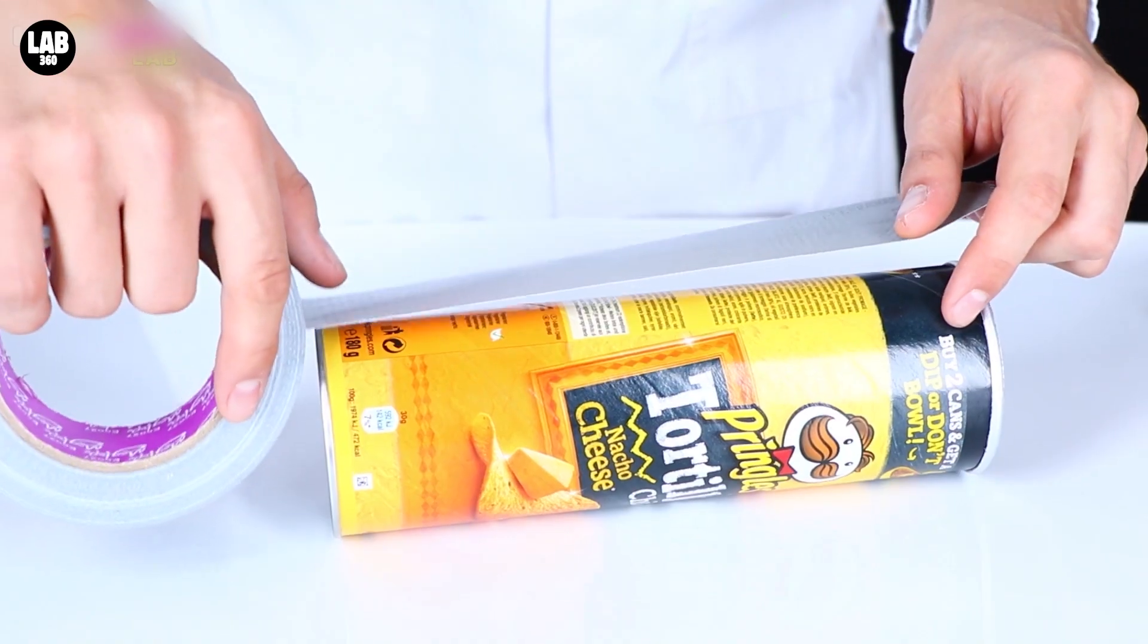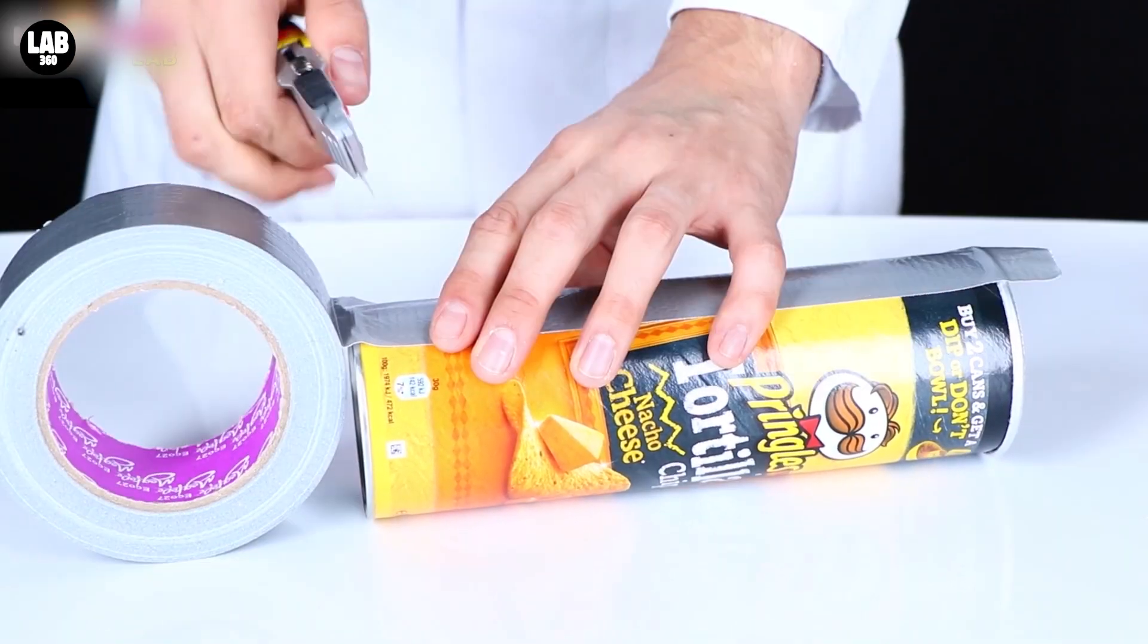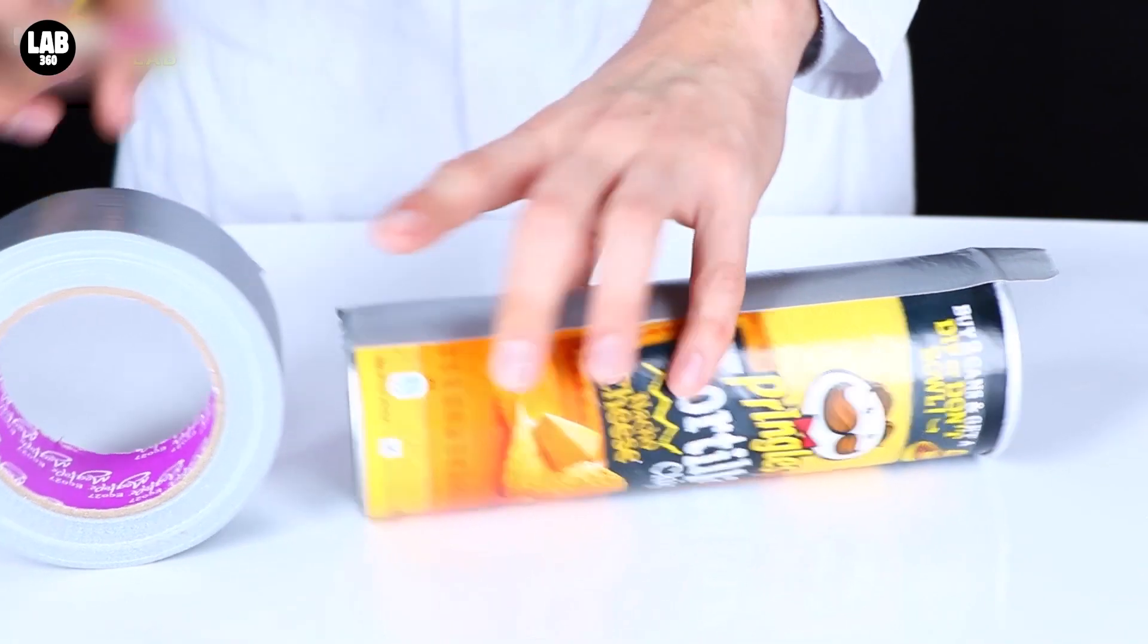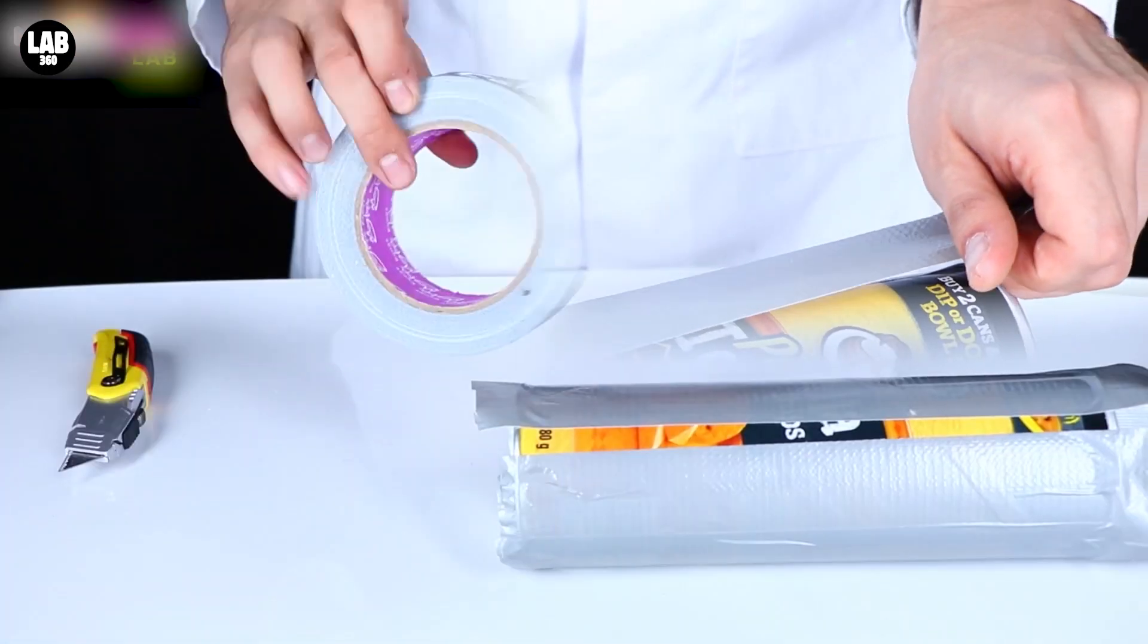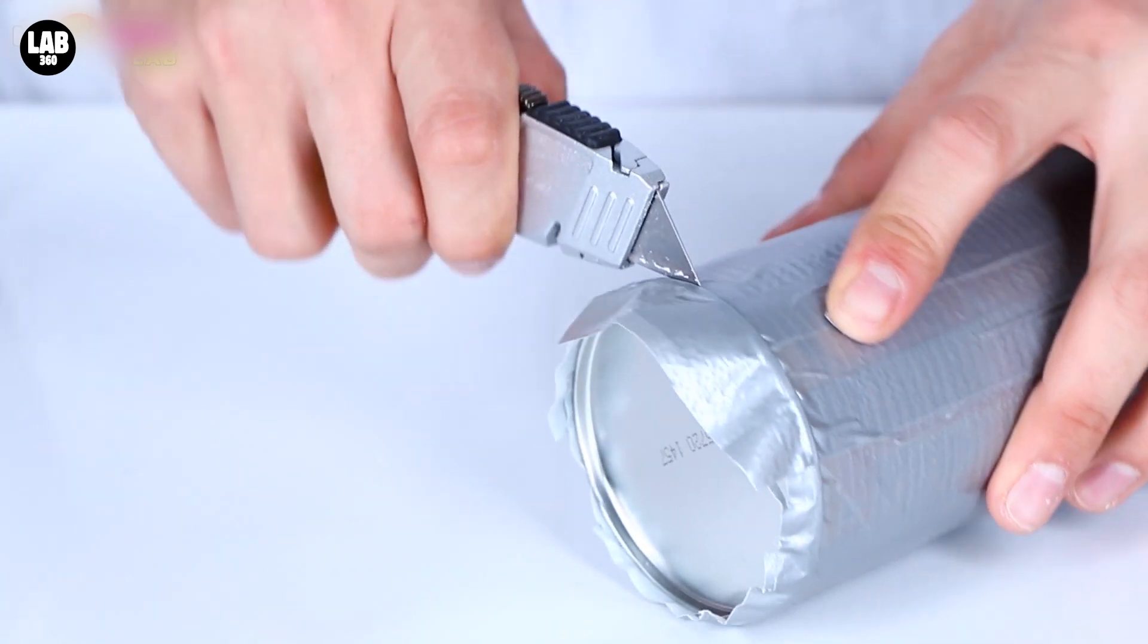Now you can either stick the tape on vertically like I'm doing, or you can stick it around the cylinder in a spiral pattern, whichever one you prefer.